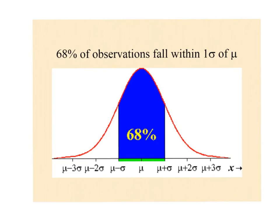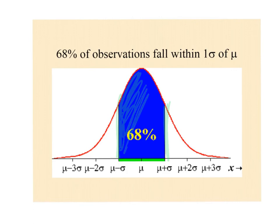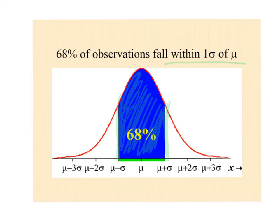After mathematicians did the calculus and computed the section from one standard deviation below to one standard deviation above the mean, they found that area to be 0.68, or 68%. So 68% of all data falls within one standard deviation of the mean — that's a number you need to have memorized. If you're within one standard deviation, you are very likely — 68%.